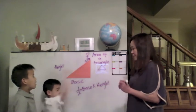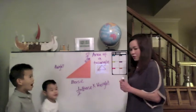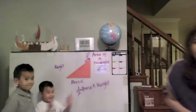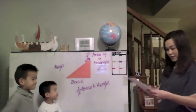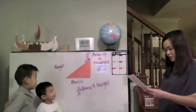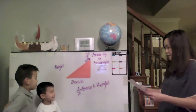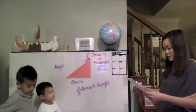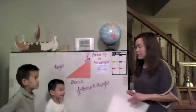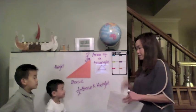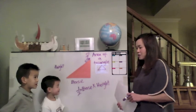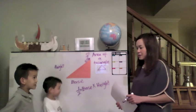So what's the area of a triangle, Josh? The area of a triangle is half base times height. Half base times height. What's the area of a triangle, Caleb? The area of a triangle is half base times height.